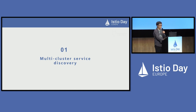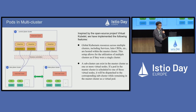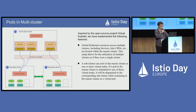Next, let's talk about how we meet the first key requirement: multi-cluster service discovery. Inspired by the open-source project Virtual Kubelet, we have implemented the following features. Firstly, global Kubernetes resources across multiple clusters — including services and Istio CRDs — are hosted within the master cluster, allowing utilization of multiple clusters as if they were a single cluster. Secondly, a sub-cluster can exist in the master cluster as one or more virtual nodes. If a pod in the master cluster is scheduled to run on these virtual nodes, it will be dispatched to the corresponding sub-cluster while remaining in the master cluster as a virtual pod.